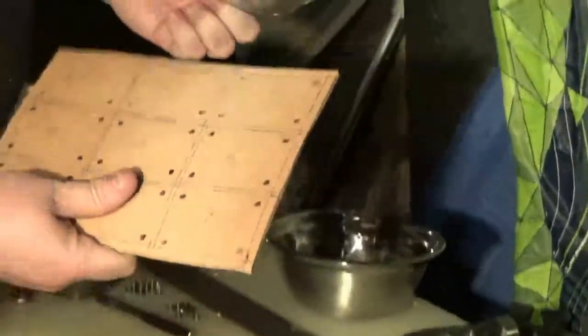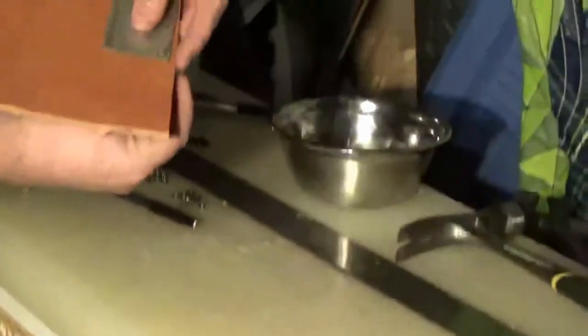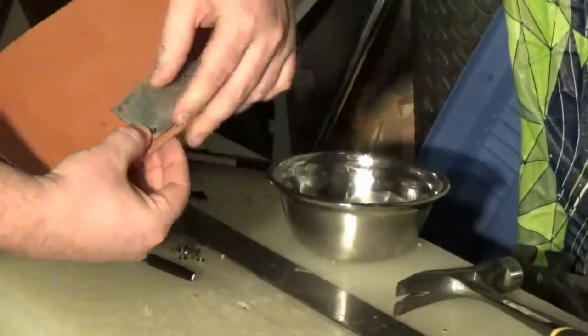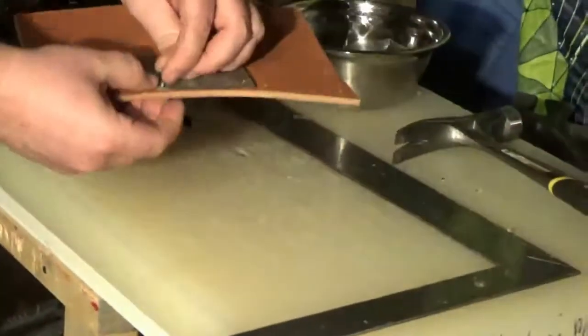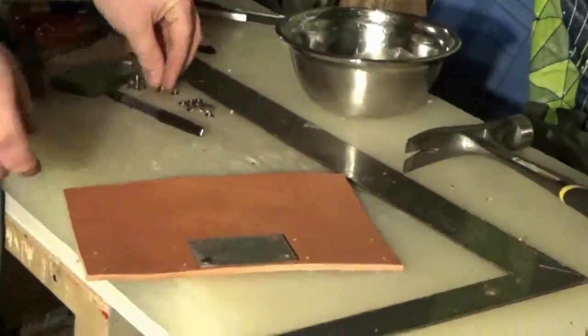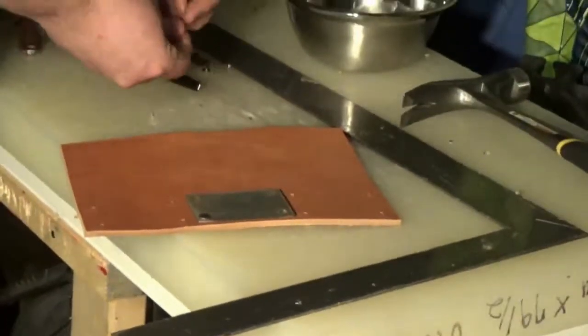We've got this first row of holes ready to go. So we're going to take our plate, match it to the number, feed the stem of the rivet through the hole and the plate, and pop the cap on. We're going to do that for each of them and then we're going to take them over to the anvil and pound them down.